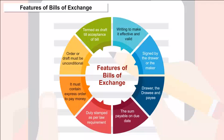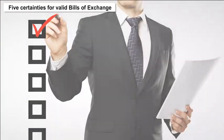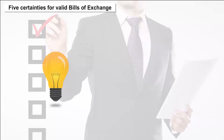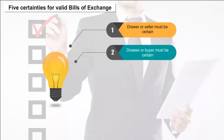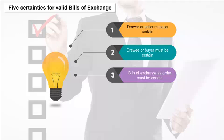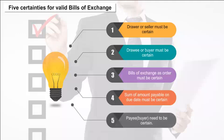Five Certainties for a Valid Bill of Exchange: The drawer or seller must be certain; the drawee or buyer must be certain; the order in the bill of exchange must be certain; the sum of amount payable on the due date must be certain; and the payee, that is the buyer, needs to be certain.